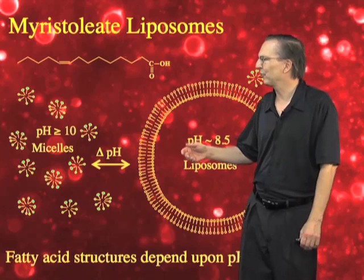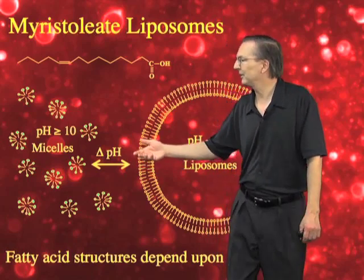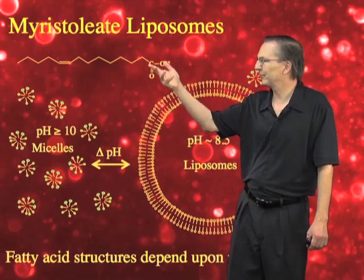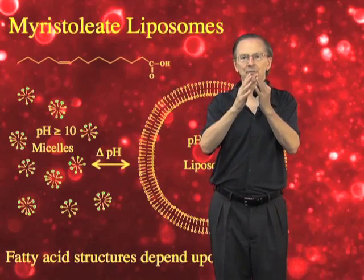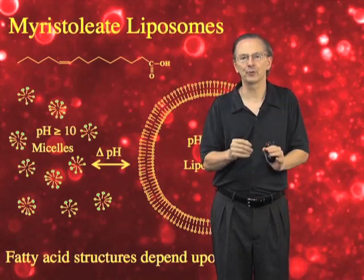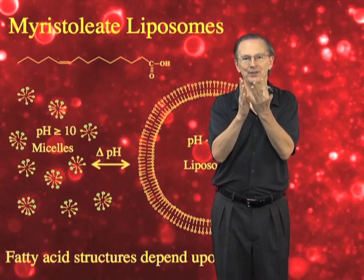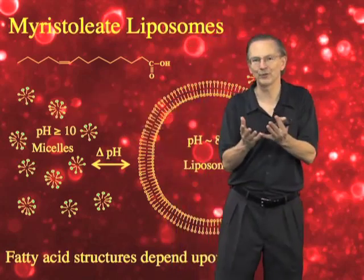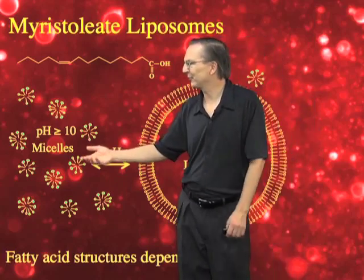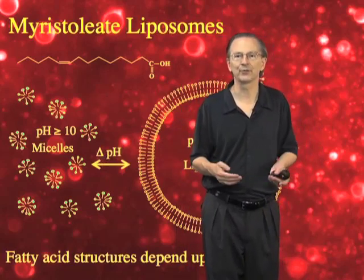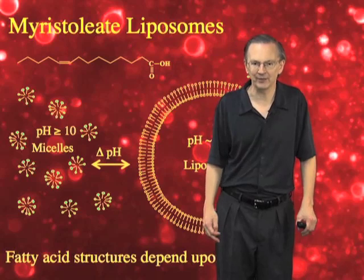The most important of those depends on the pH of the environment. At fairly alkaline pHs, the carboxylates of fatty acids are basically fully ionized. Charge repulsion wants to keep those groups as far apart from each other as possible, while the hydrophobic forces want to keep the hydrophobic tail of the molecule as close together as possible. And the result is the formation of micelles, which are very small aggregates, a few nanometers in size, and composed of roughly 10 to 100 fatty acid molecules.